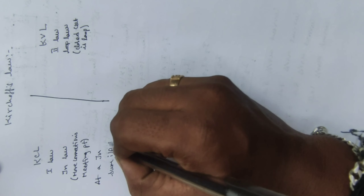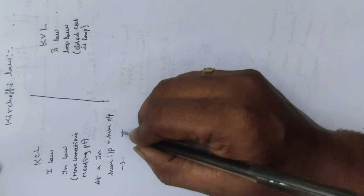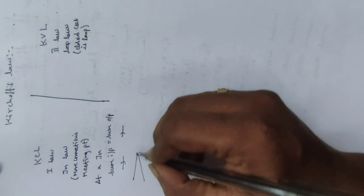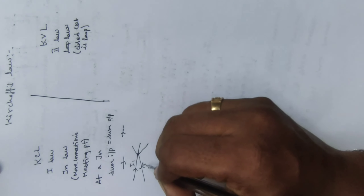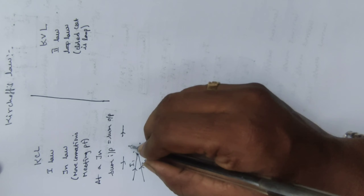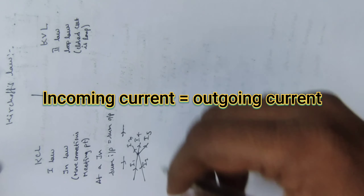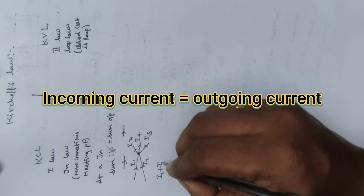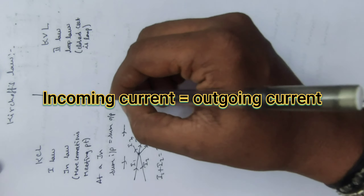The sum of incoming current is equal to the sum of outgoing current. At a particular junction, if you have n number of connections, all the currents coming towards the junction are incoming currents, and all the currents going away from the junction are outgoing currents. According to this example, applying Kirchhoff's Current Law gives the expression: i1 plus i2 equals i3 plus i4 plus i5.